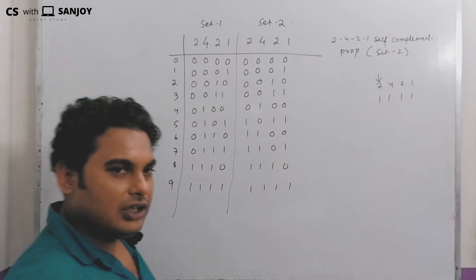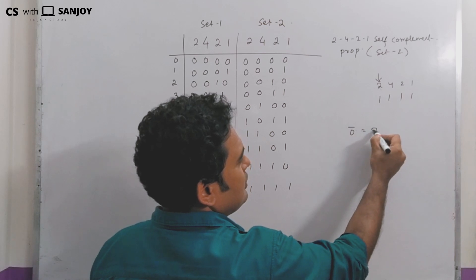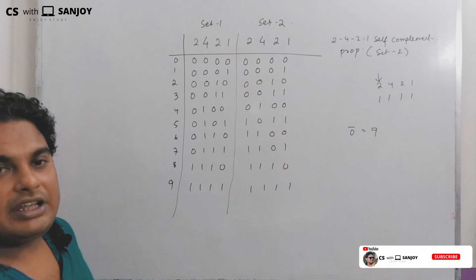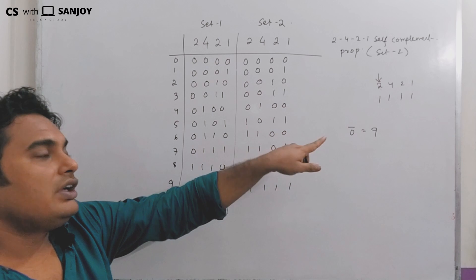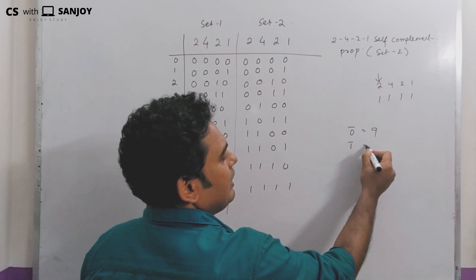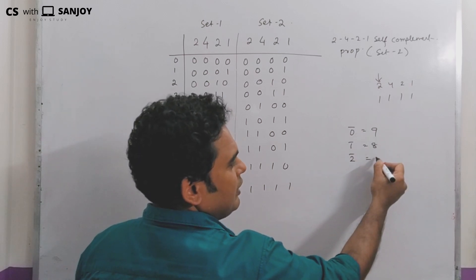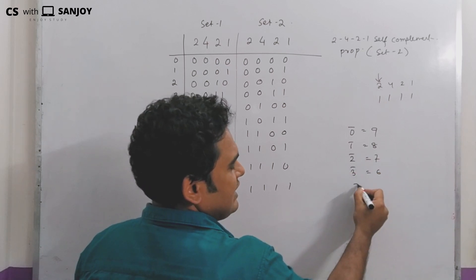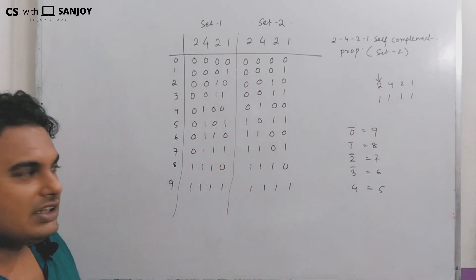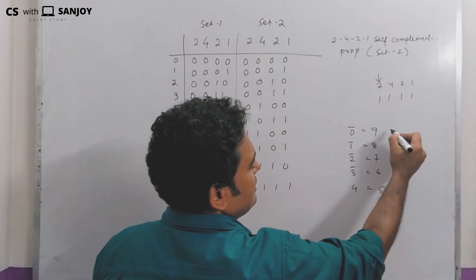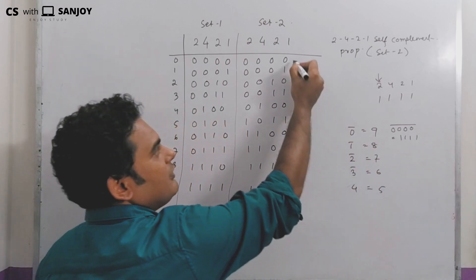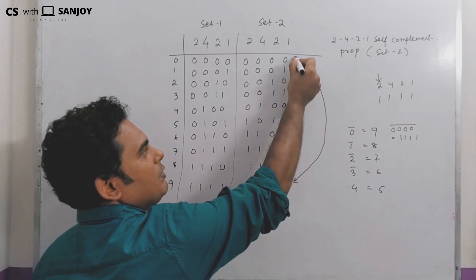Now, what is the self-complementing property? The complement of 0 equals 9, the complement of 1 equals 8, the complement of 2 equals 7, and the complement of 3 equals 6, and the complement of 4 equals 5. These are 9's complements. Now, 0 has binary representation 0000. If I take its complement, it becomes 1111, which is 9. Correct.